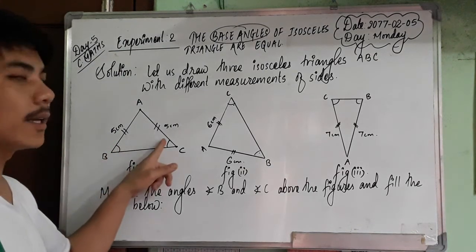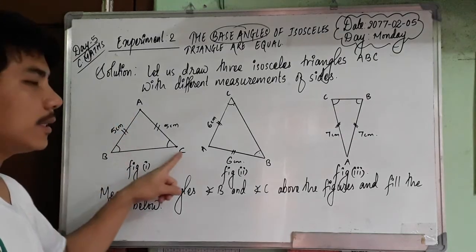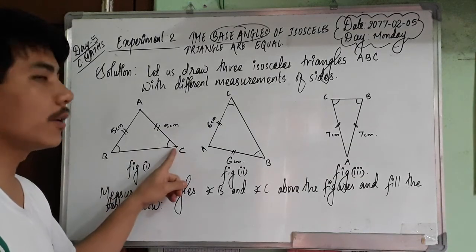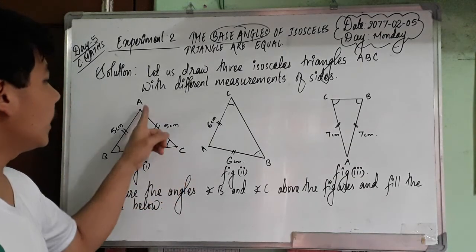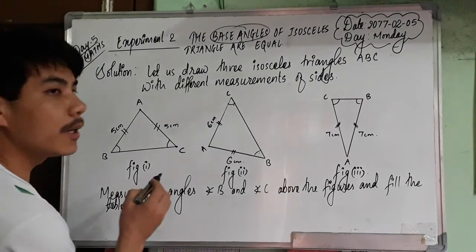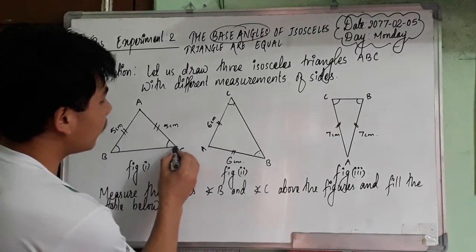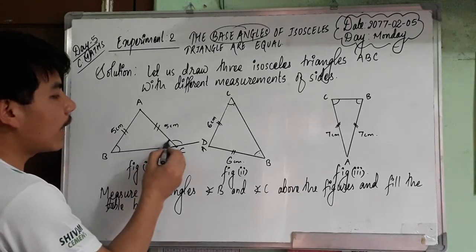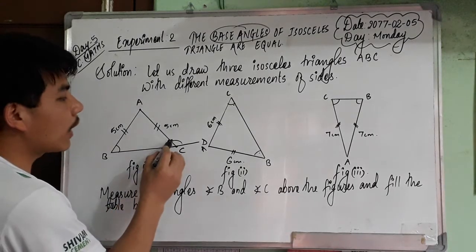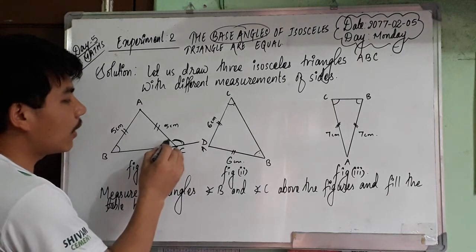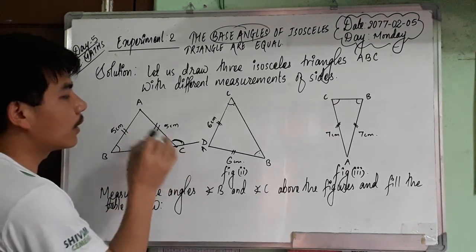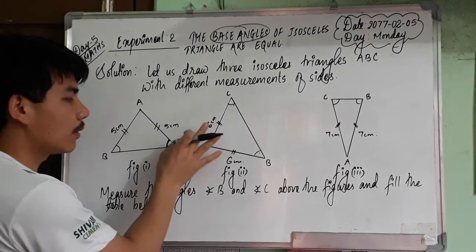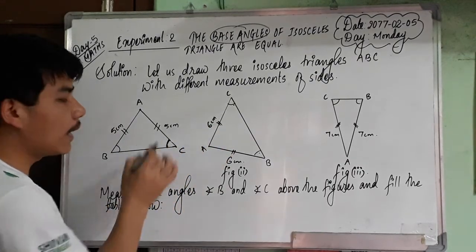We have figure, angle ABC, angle ACB, and result columns. This angle is B - it's between here and here. The angle is C. This angle is ACB. So you have angle B and angle C.